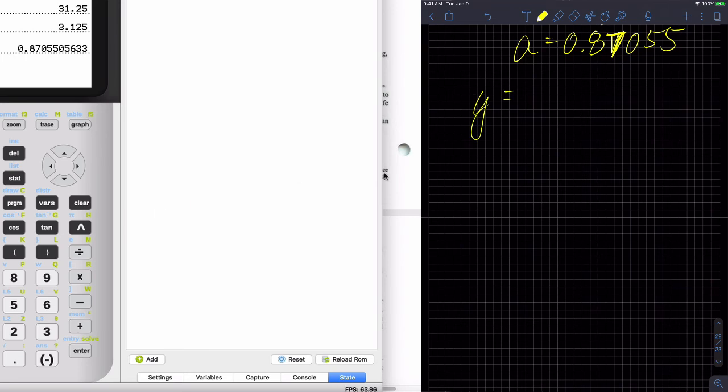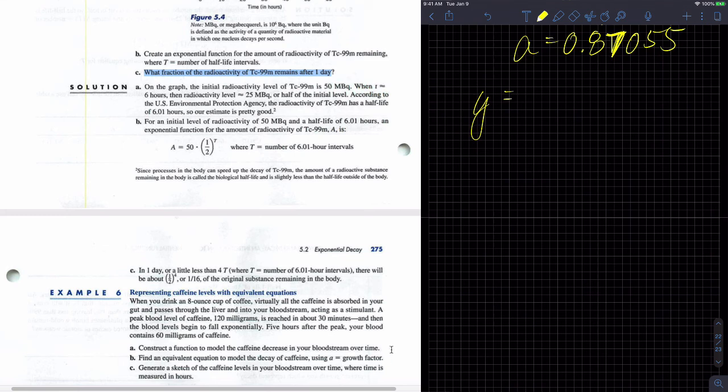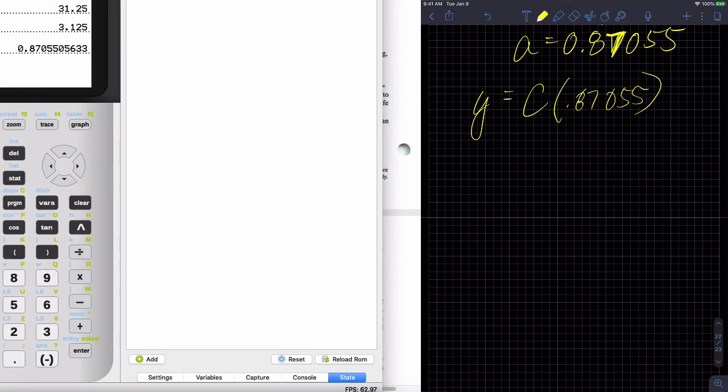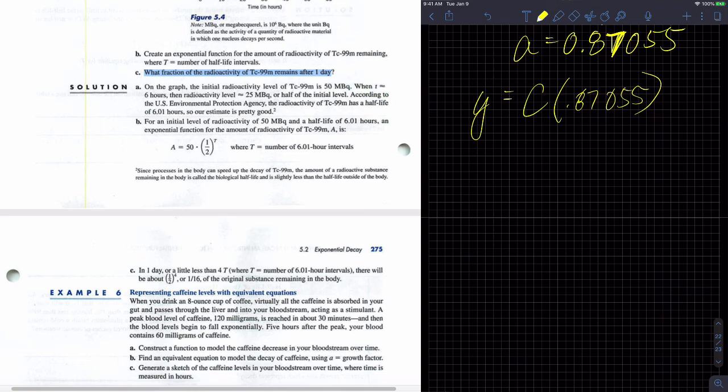And so my equation looks like this. Did they just ask for the growth factor or did they ask for the equation? I don't know. I remember which one. Find an equivalent equation, whether A is the growth factor. So it's going to be some starting amount times 0.87055. Did I round that nicely or not so much nicely? Yeah, I did it. Raised to the T. And in this case, T is equal to hours after peak caffeine. And C.